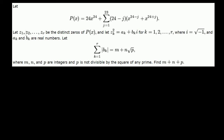Let z₁, z₂, all the way to z_r be the distinct zeros of p(x). Let z_k squared equal a_k plus b_k·i for k equals 1 through r.